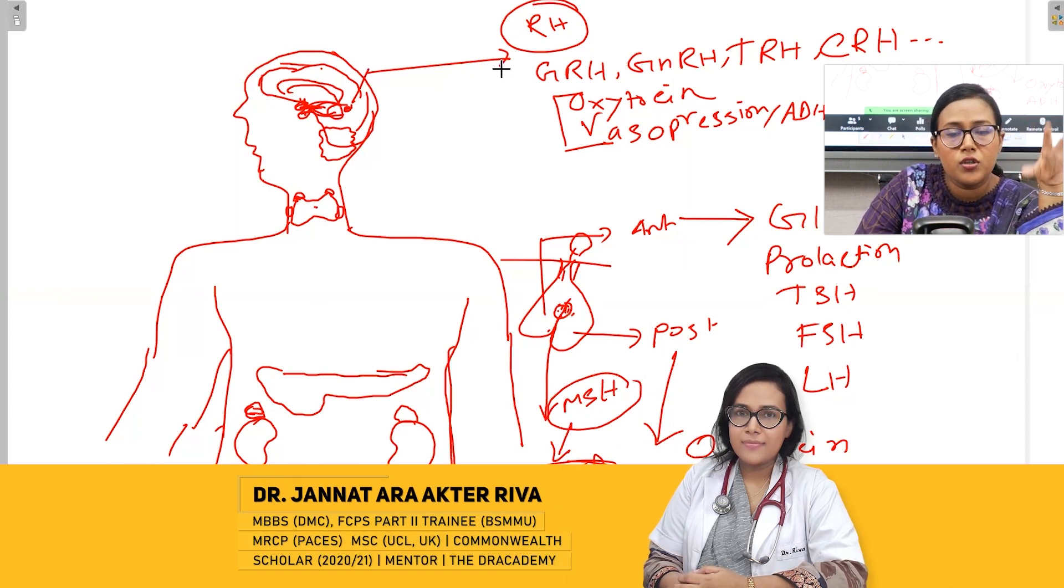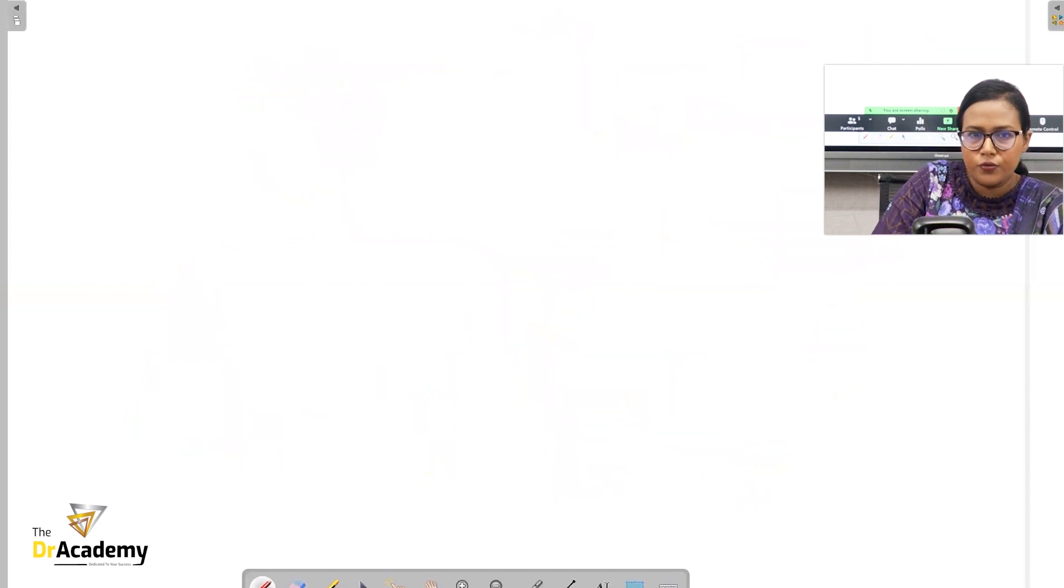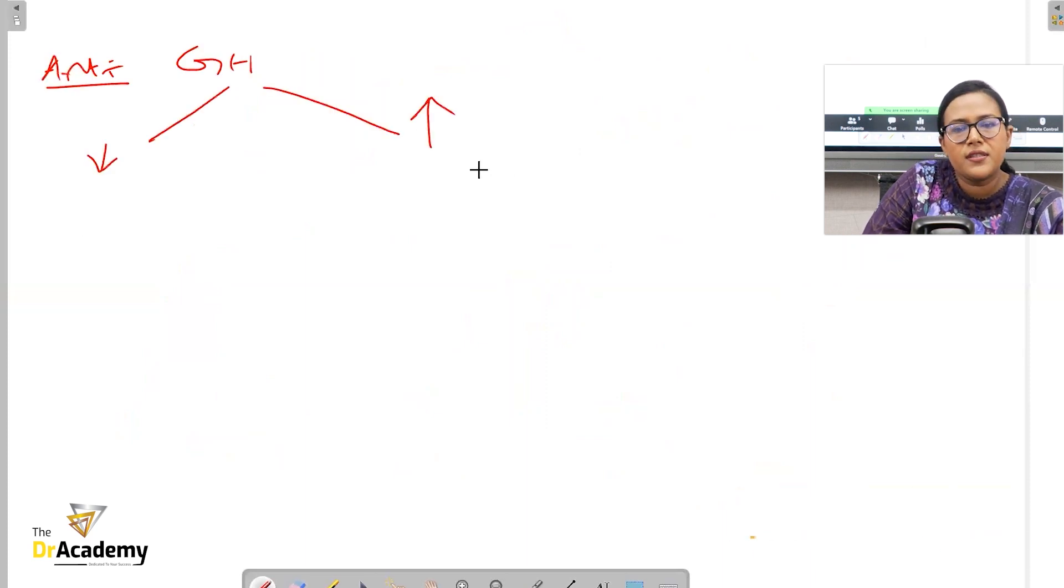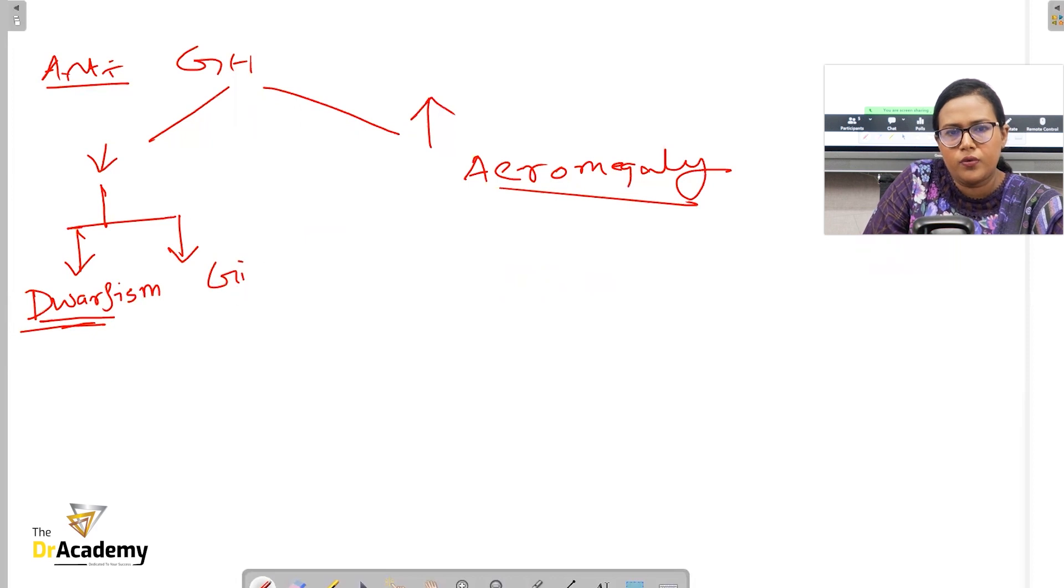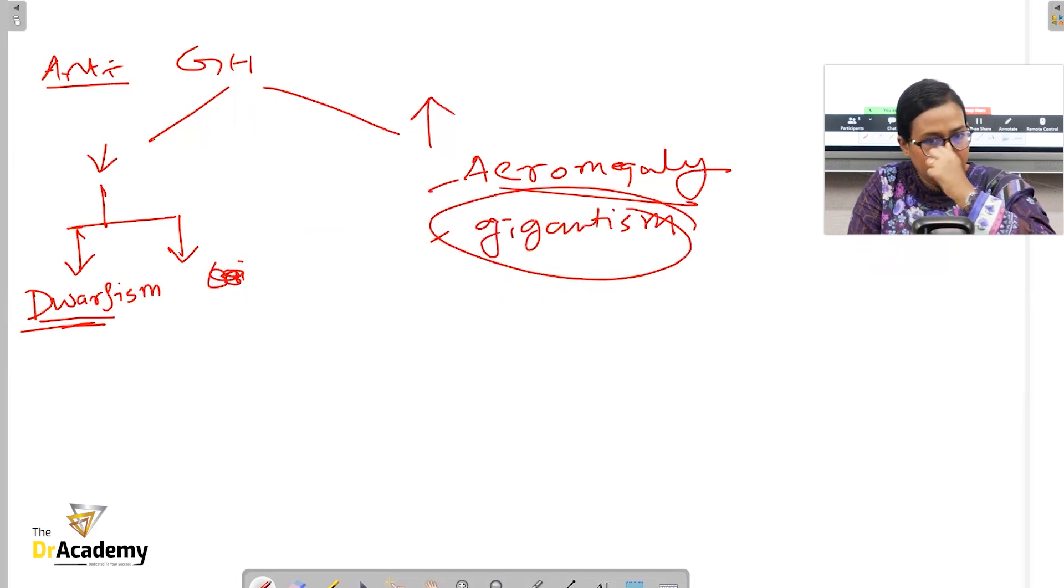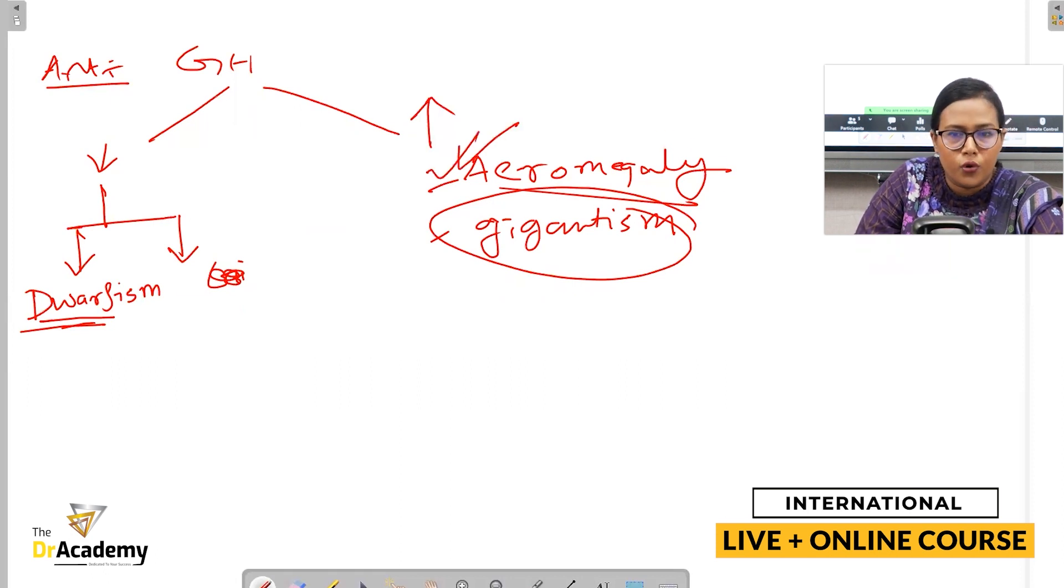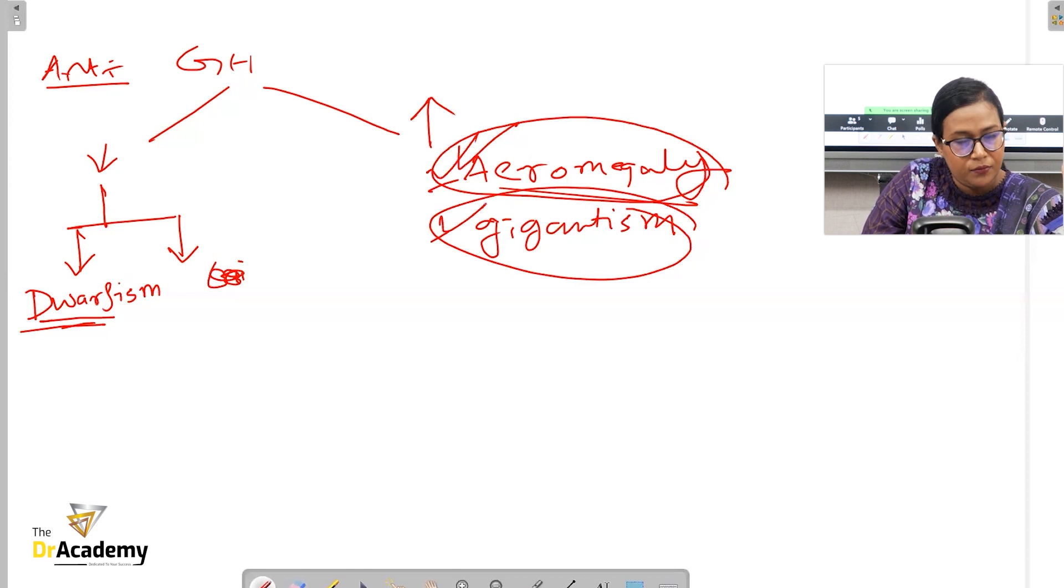We'll discuss the possible pathology that can arise from the anterior pituitary. For growth hormone, it can be either high or low. If high, you can expect acromegaly. If low, it can be further divided into two varieties - one is dwarfism or gigantism. For MRCP part 1 preparation, you should focus on acromegaly.